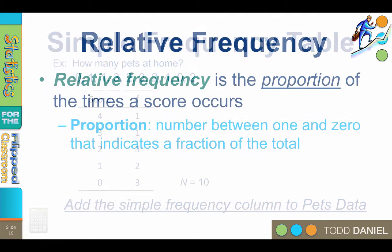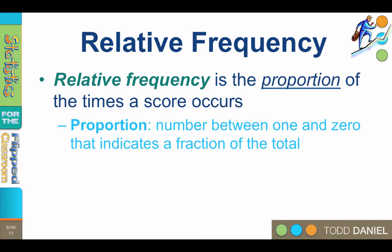Next, I'm going to create another column for the relative frequencies in the data. The relative frequency is a number between zero and one that represents the proportion of time the score occurs in the data set. The term proportion refers to a ratio or division. Therefore, the relative frequency is going to be the frequency divided by n.